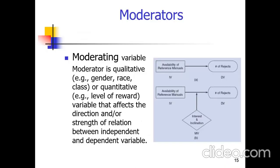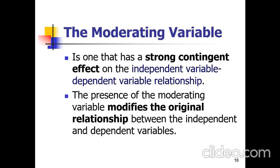A moderating variable is a qualitative (e.g., gender, race) or quantitative (e.g., level of reward) variable that affects the direction or strength of the relationship between the independent and dependent variable. The presence of a moderating variable modifies the original relationship between the independent and dependent variables. Depending on the strength of the moderator, the relationship may be weak or strong.